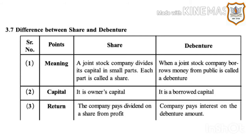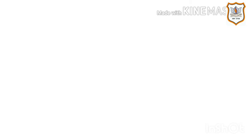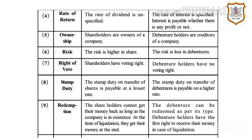Third point — Return: The company pays dividend on a share from profit. In debenture, the company pays interest on the debenture amount. Fourth point — Rate of Return: The rate of dividend on shares is unspecified, while in debentures the rate of interest is specified and is payable whether there is any profit or not.